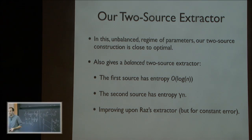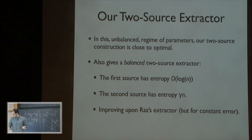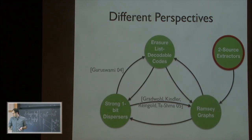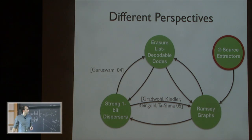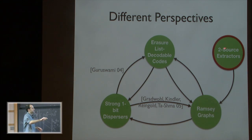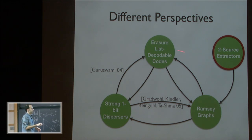Summing up the different objects: some implications were already known, and by constructing the two-source extractor we manage to derive all the other objects.